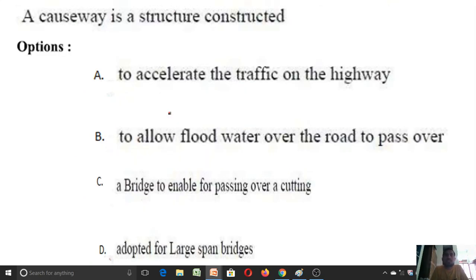A causeway is a structure constructed: option A to accelerate the traffic in highway, B to allow the flood water over the roadway to pass over, C to pass over a bridge, D to enable passing over the cutting. Answer B is correct: to allow the flood water over the road to pass over. I will explain why. We have a stream of water here and here we have a road. In this stream, the water flows only in one season, that is rainy season. When the water flows in a limited period of time, we will not construct a bridge. The only option is a low line causeway, a hydraulic structure constructed across the stream. It will allow the water from this stream during the rainy season only.